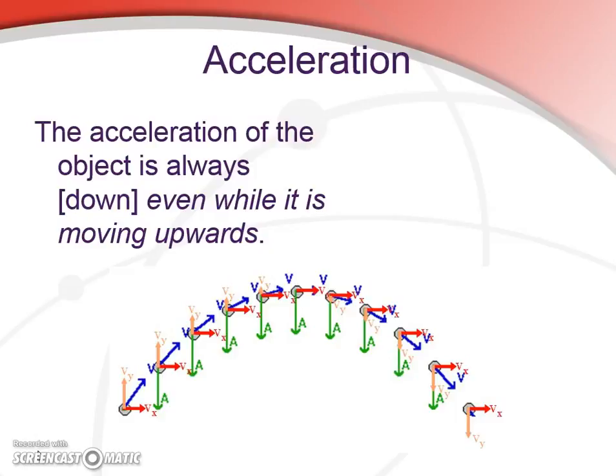So first off, if we're considering an object, a projectile, its acceleration will always be downward. And it'll be of course 9.8 straight down, regardless of the direction of the projectile's motion.